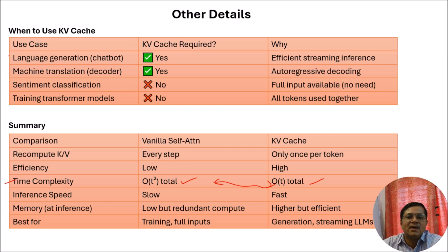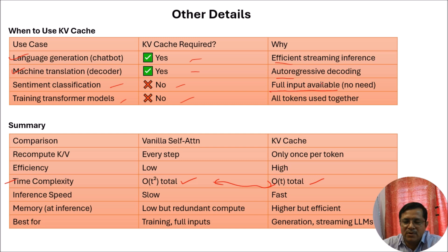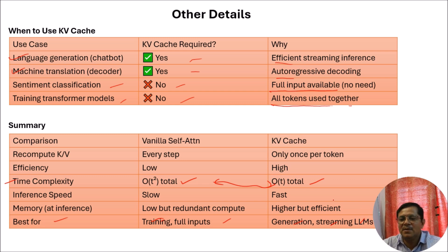Those limitations are: for language generation chatbots and machine translation decoders, we can directly use KV Cache — it is efficient for streaming inference and auto-regressive decoding. But for sentiment classification or training a transformer model, we cannot use KV Cache, because at that time the full input is already available and we use all tokens together. So vanilla self-attention is best for training with full input, and KV Cache is generally useful for generation, streaming, and LLMs — which is why these are very important, because in LLMs we deal with a huge amount of tokens.